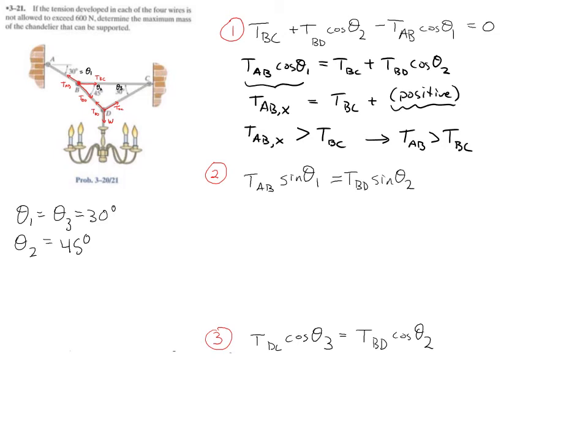We'll do something similar in these other two equations. So which one is bigger, sine theta 1 or sine theta 2? Well, theta 1 is 30 degrees and theta 2 is 45 degrees. So we know that theta 2 is larger than theta 1, right? So sine of theta 2 is bigger than sine theta 1. That means sine theta 1 is the small thing. So for equation 2 to be correct, TAB has to be bigger. TAB has to be bigger than TBD, right? Because sine of theta 1 is small on the left-hand side, so it needs to be multiplied by a bigger number in order to match the right-hand side.